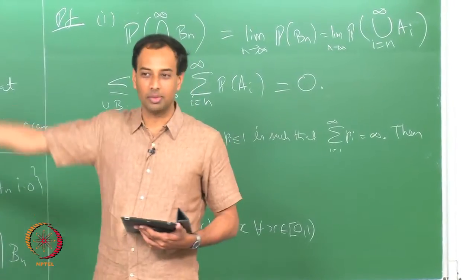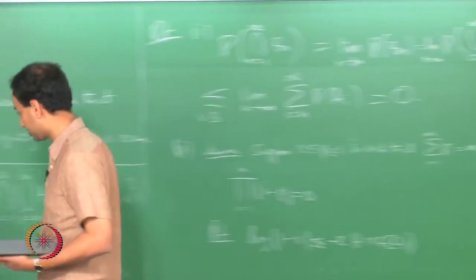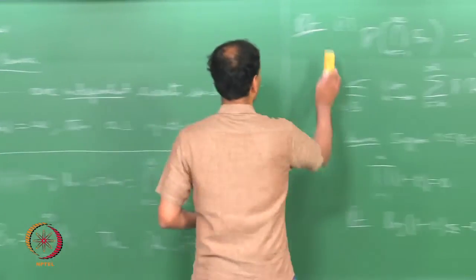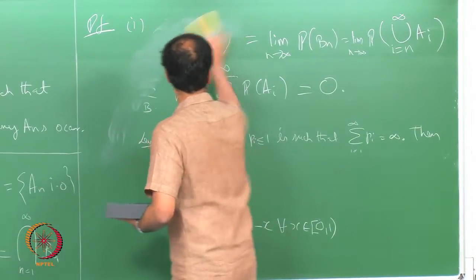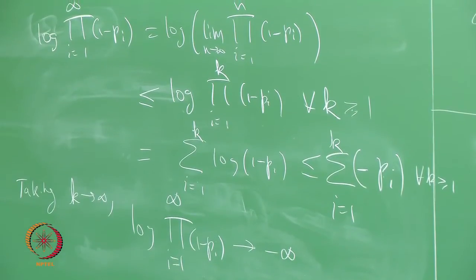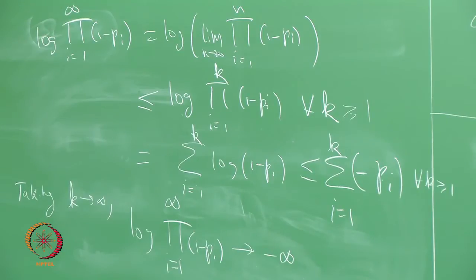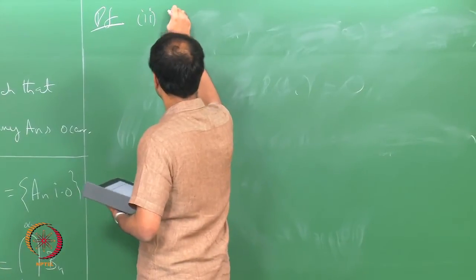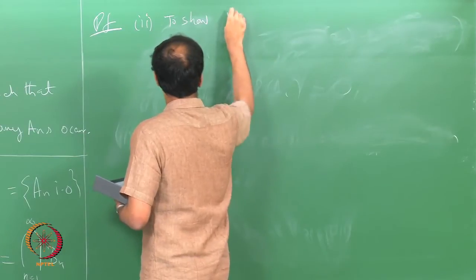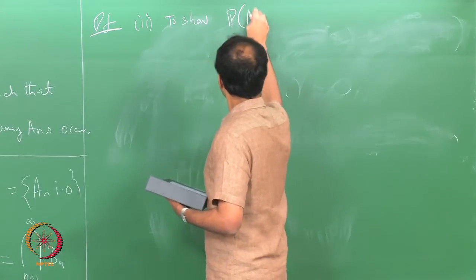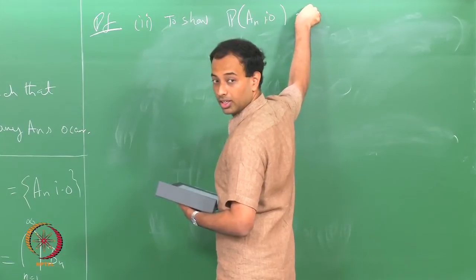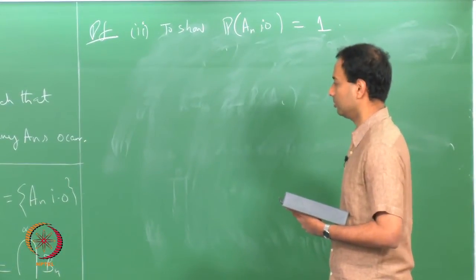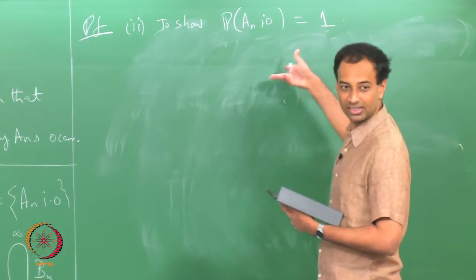Now we want to prove Borel-Cantelli lemma 2. To prove it, I have to show that the probability of A_n occurring infinitely often is 1. Equivalently, I can prove that the complement has probability 0. So I will look at the probability of the complement of this event.